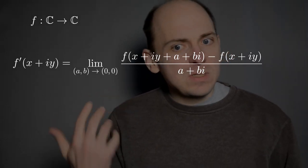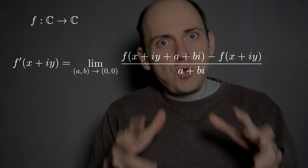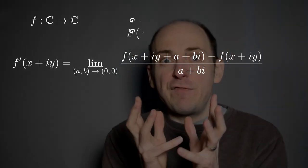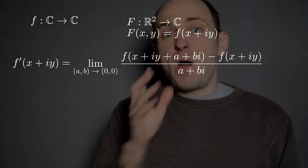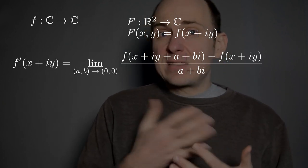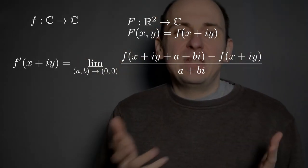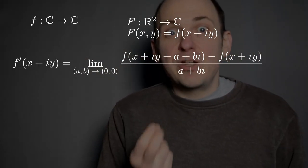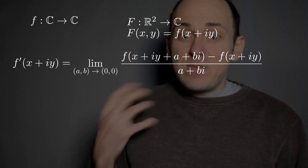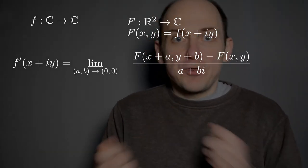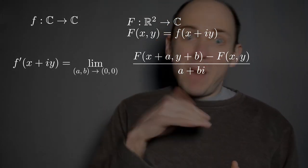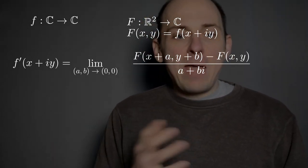Now I can use the tools of multivariable calculus to analyze this situation, which we're really seeing in complex analysis. Let's introduce a new function big F — a function from ℝ² to ℂ — which is really just another name for little f. So big F(x, y) is just f(x + iy). I want to give a different name to this so I can talk about a function of two real variables, as distinguished from little f, which is a function of a single complex variable. That lets me rewrite this difference quotient as: big F(x+a, y+b) minus F(x, y), all divided by a plus bi.